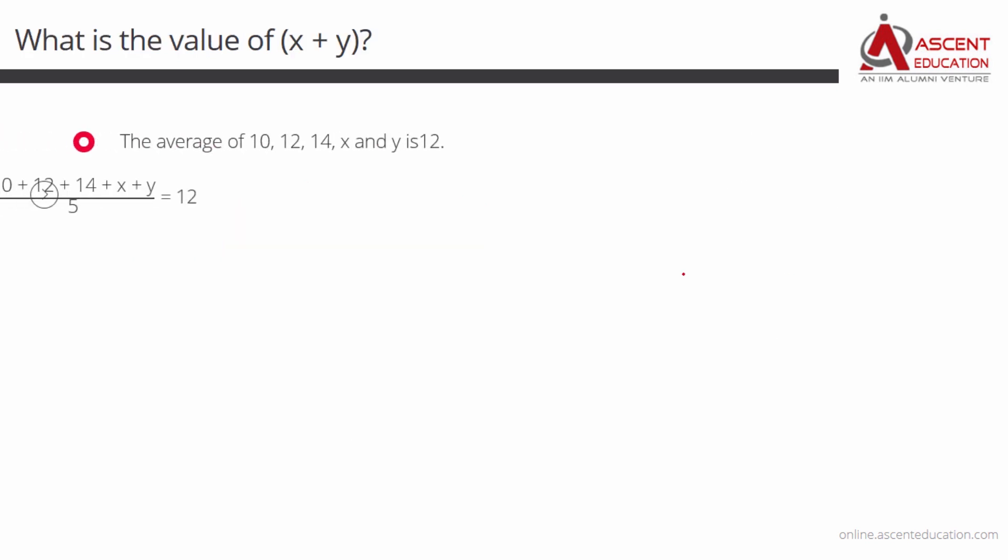Let's quickly look at how to go about it. Average of these five numbers is 12. How do we compute average? Average is usually computed as find the sum of all the numbers divided by the number of numbers. So, in a sum, 10 plus 12 plus 14 plus x plus y divided by 5 is equal to 12.